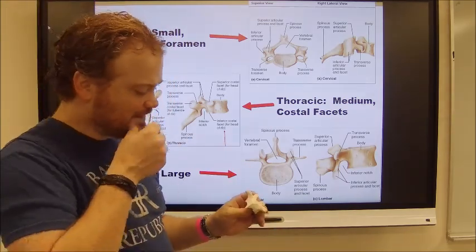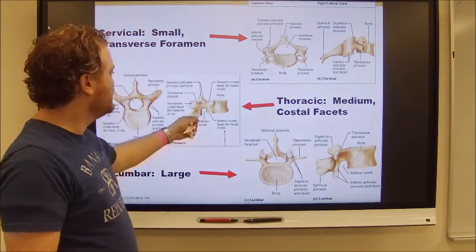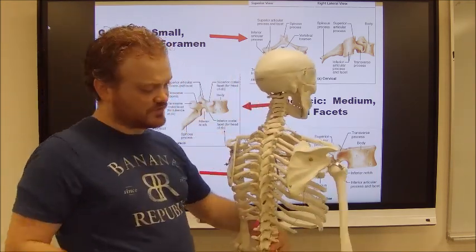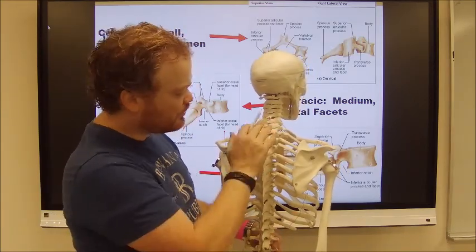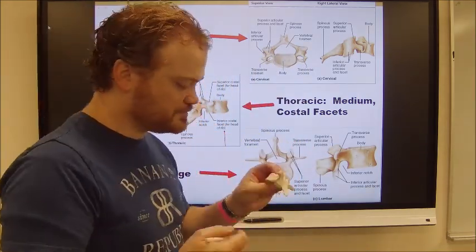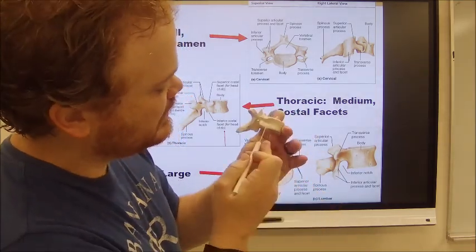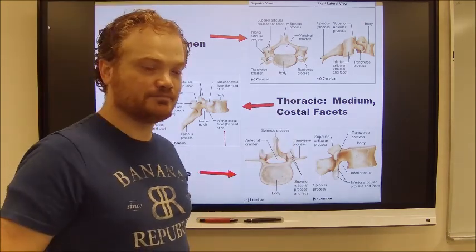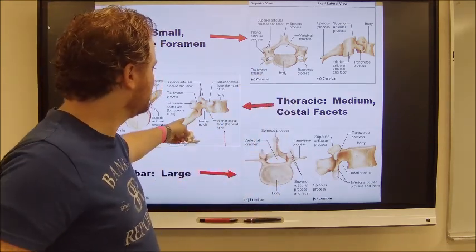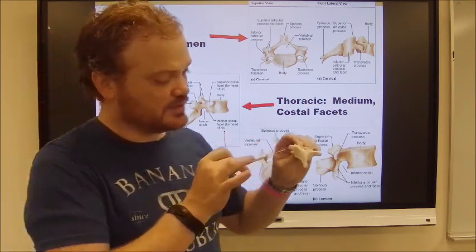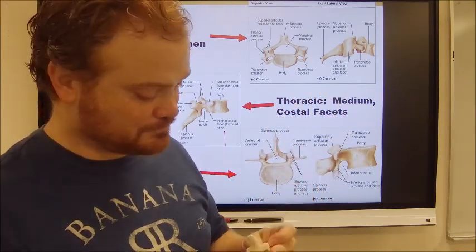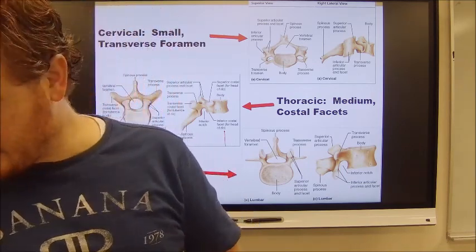Thoracic vertebrae are easily distinguished because they have costal facets — rib connection points. All thoracic vertebrae connect to ribs, so if you see those indentations — costal facets here and there — you know it's a thoracic vertebra. Alternatively, if it looks like a giraffe — horn, ear, long nose — it's probably a thoracic vertebra.